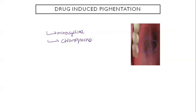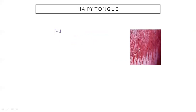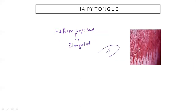Next we have hairy tongue. This is caused by elongation of the filiform papillae, which makes the tongue look hairy with projection-like appearances.